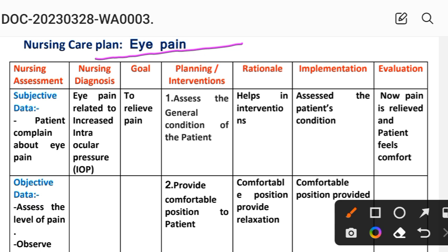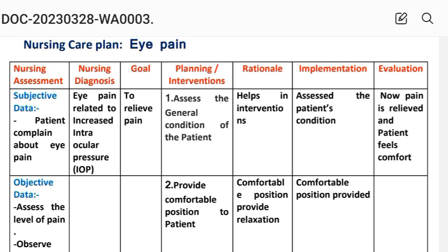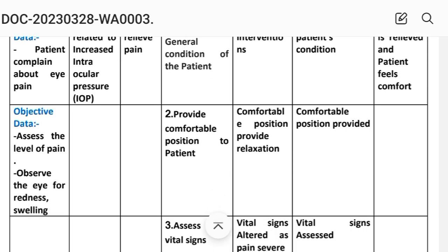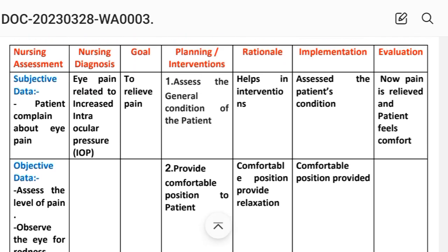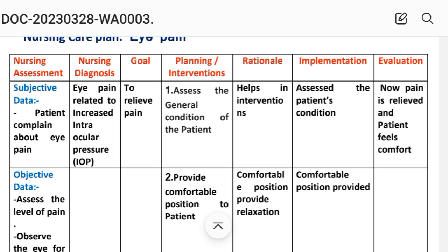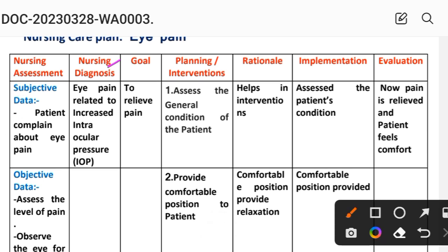Nursing Care Plan Number 5 (last care plan): Eye Pain. Nursing assessment — subjective data: patient complains of eye pain. Objective data: assess the level of pain, observe the eye for redness and swelling. Nursing diagnosis: eye pain related to increased intraocular pressure. Goal: to relieve pain.